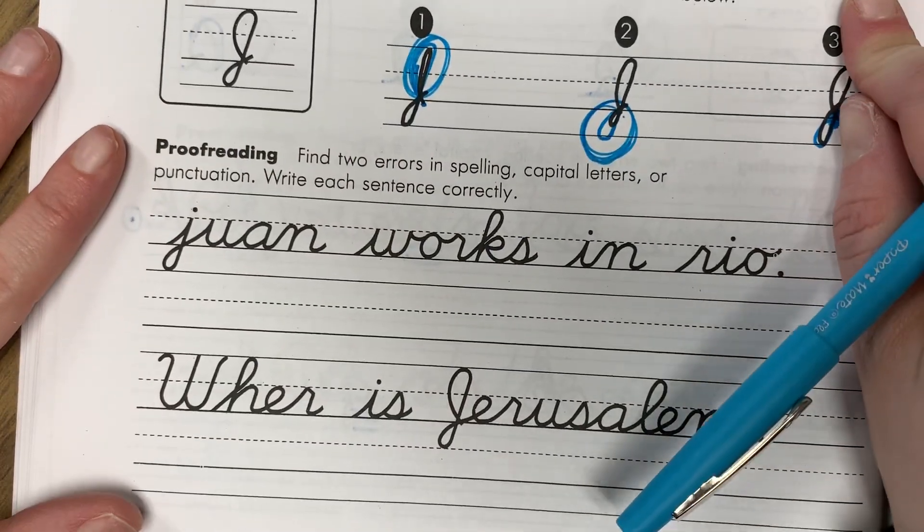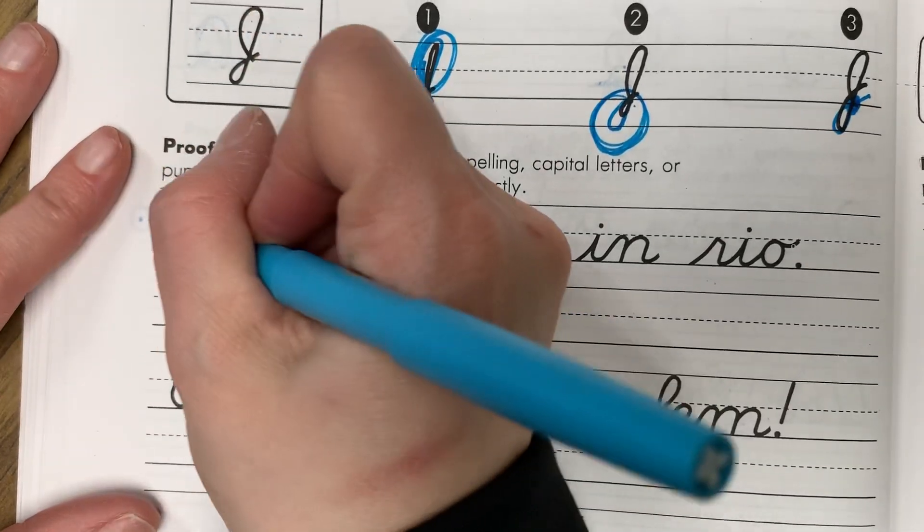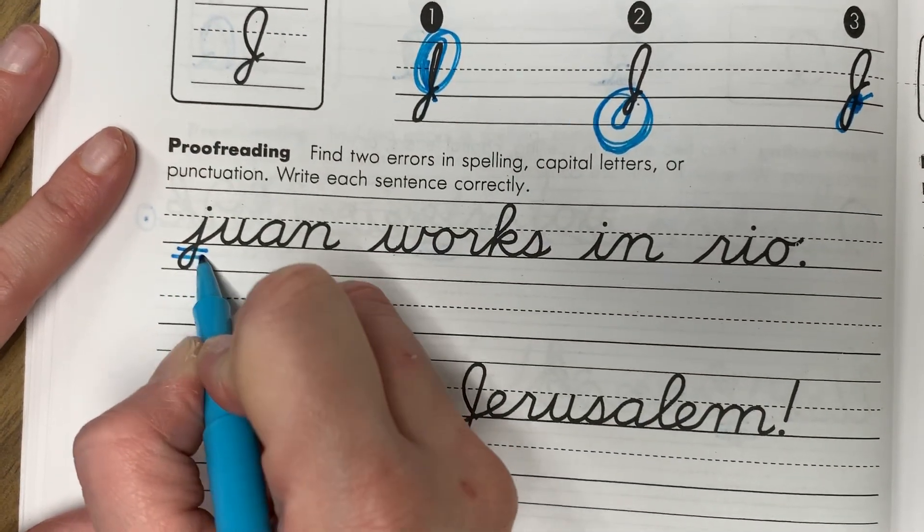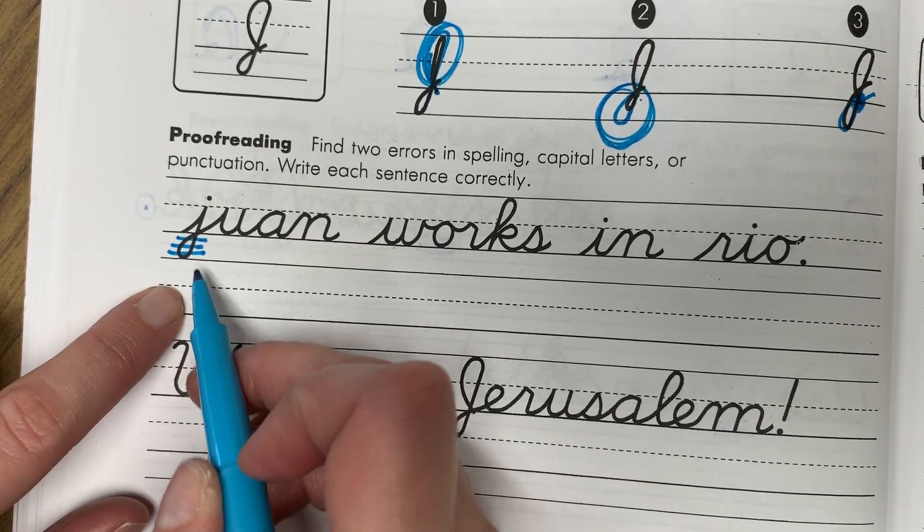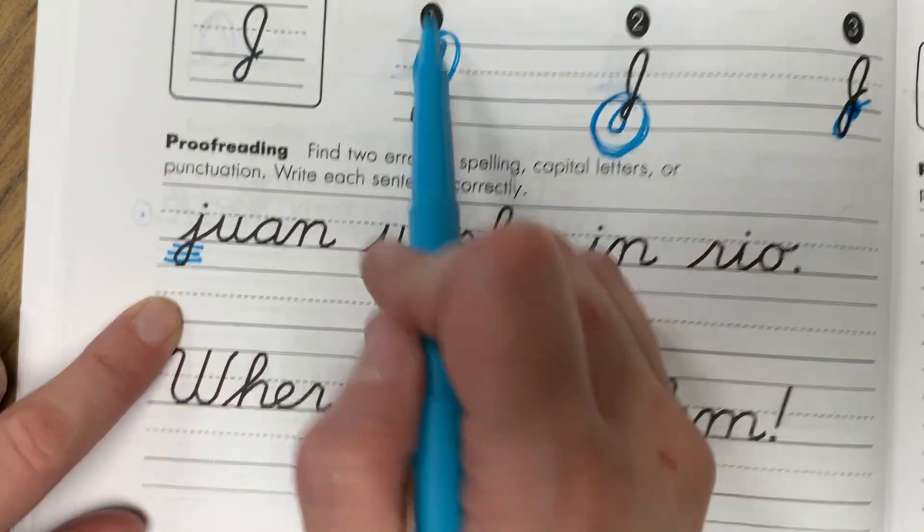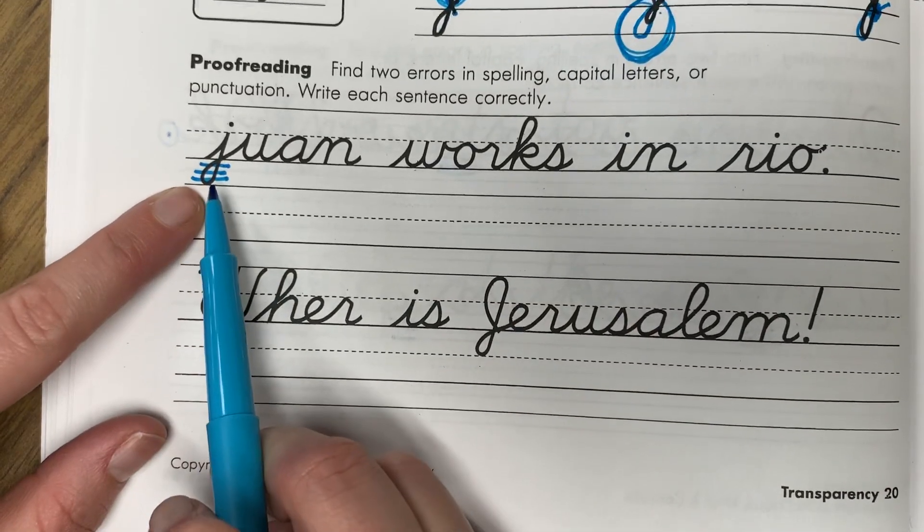And then let's fix our sentences. So this says Juan works in Rio. Juan needs to be capitalized. So look back in your book at how to do a capital. Well, not look back, but right here we just did a capital J. So capitalize Juan.